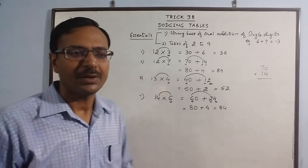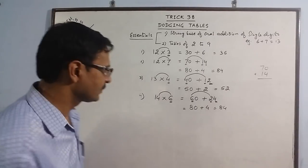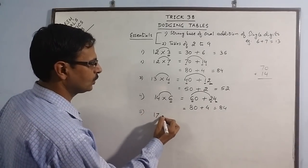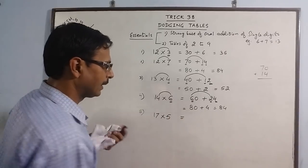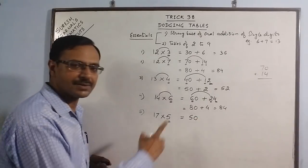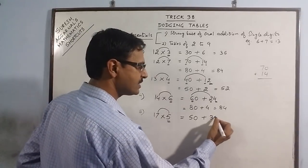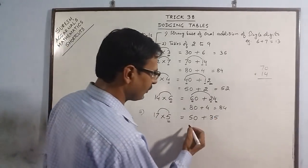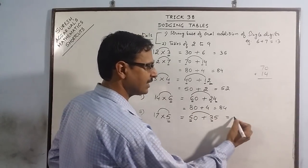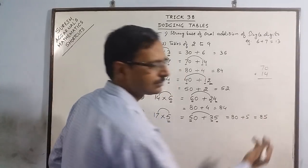Let us take one more example so we are convinced this method works for any larger number. Say 17 into 5. We have 5 here, so 5 supplemented by a 0, plus 5 sevens are 35 — we need single-digit tables. Now for adding: tens digits, 5 plus 3 is 8, put a 0 and write this number, so 85.